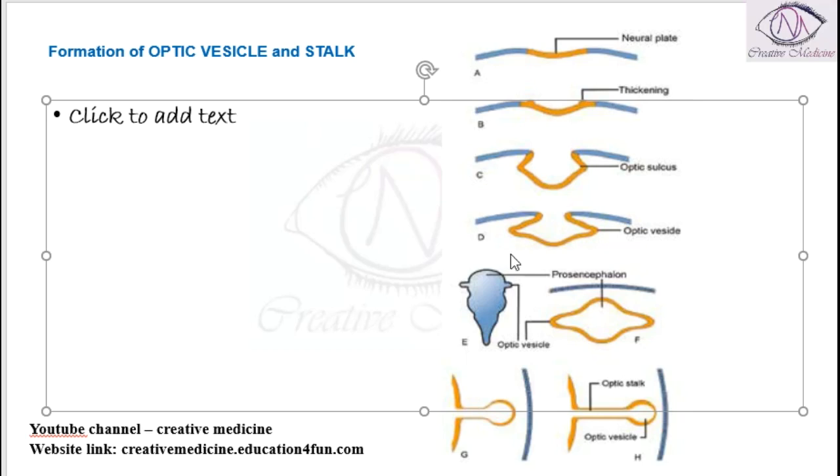These are called optic vesicles. Now this optic vesicle will result in formation of these structures. So on cross section you see optic vesicles like this, with an optic stalk and the optic vesicle.